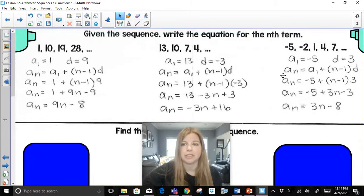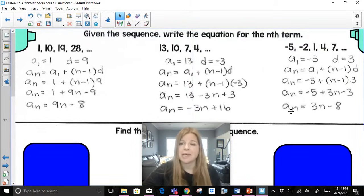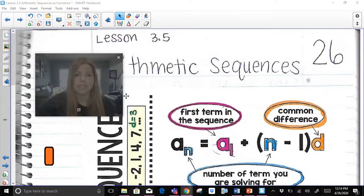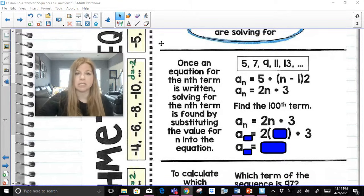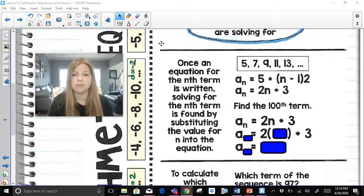That's it. Those are my equations. And again, when it says to write the equation for the nth term, that means you should have n in your final answer. So now we're going to take a look at what it means to then do the next step. So it says once an equation for the nth term is written, solving for the nth term is found by substituting the value for n into the equation.